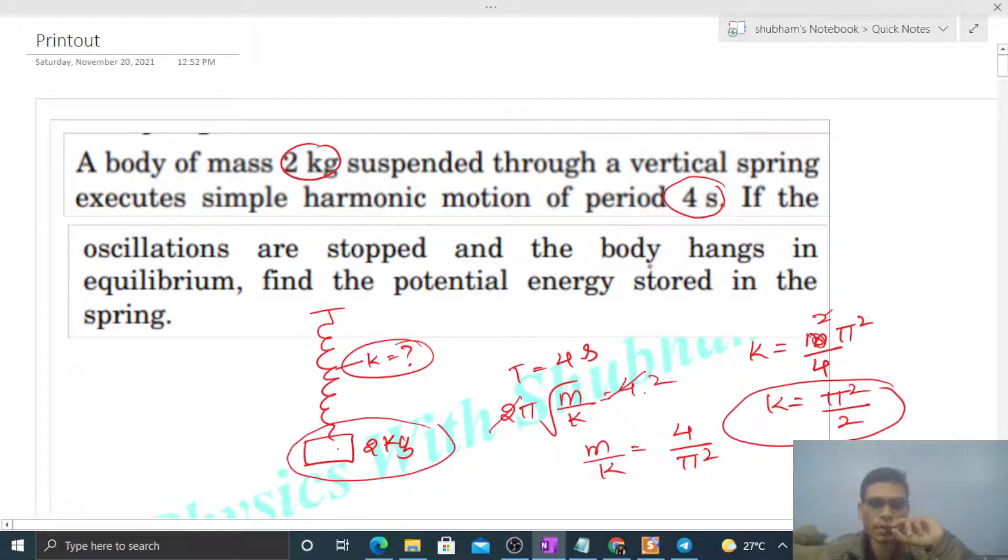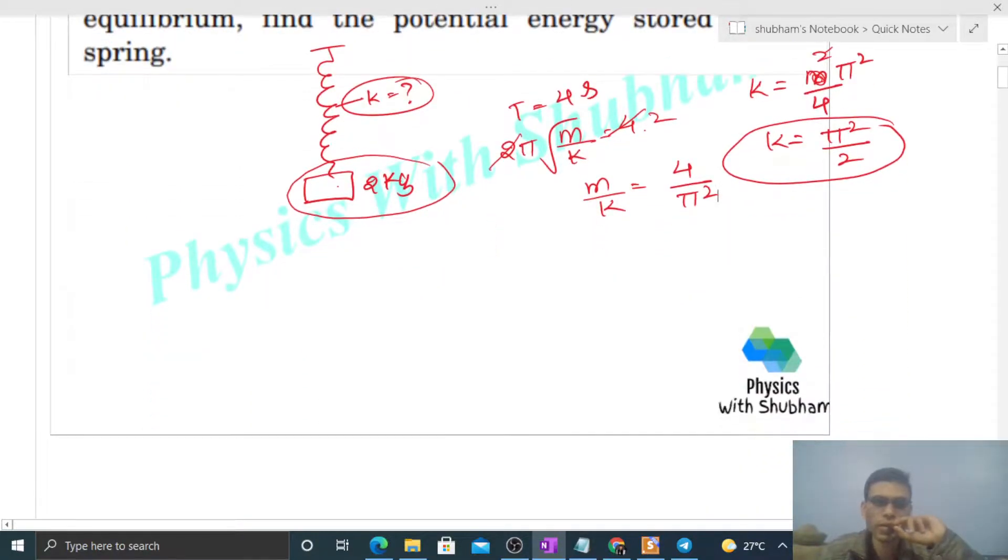Now what's happening? If the oscillations are stopped and the body hangs in equilibrium, find the potential energy. So if the oscillations stop and the body is in equilibrium, then the net force on this body in equilibrium will be zero.